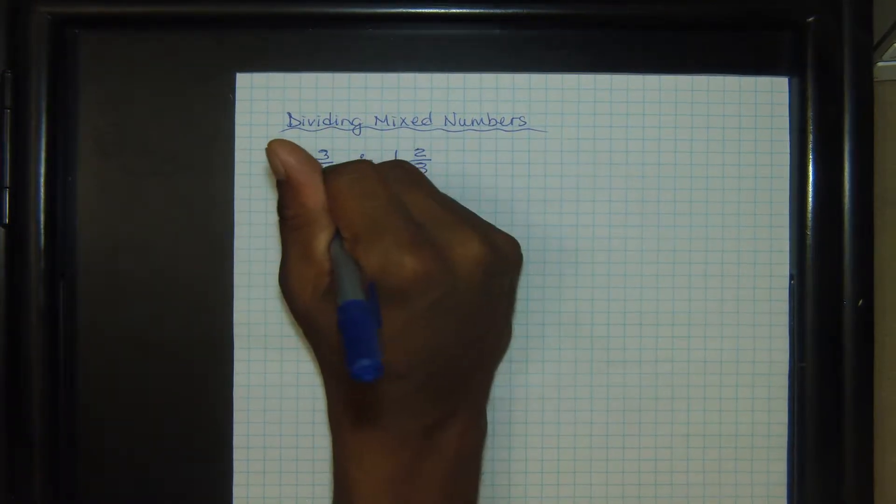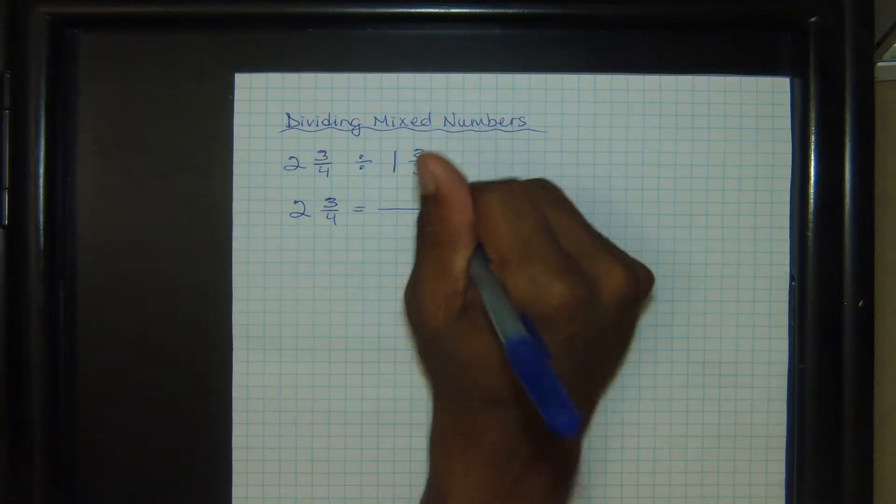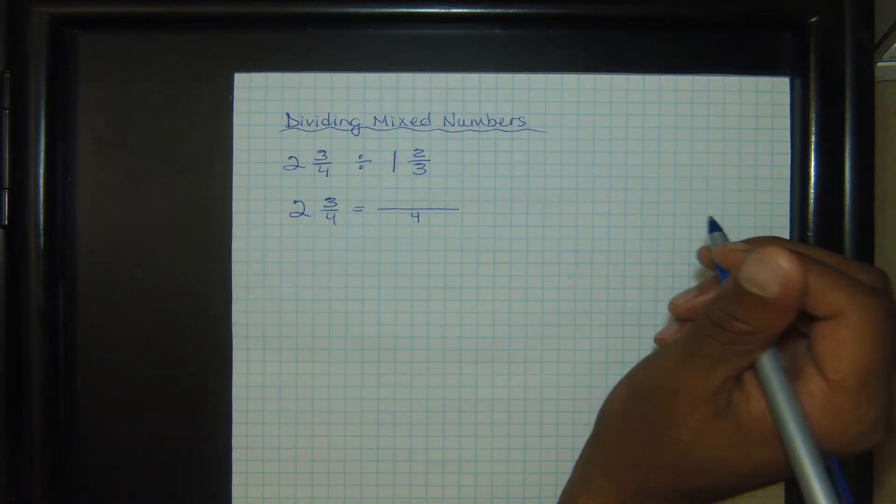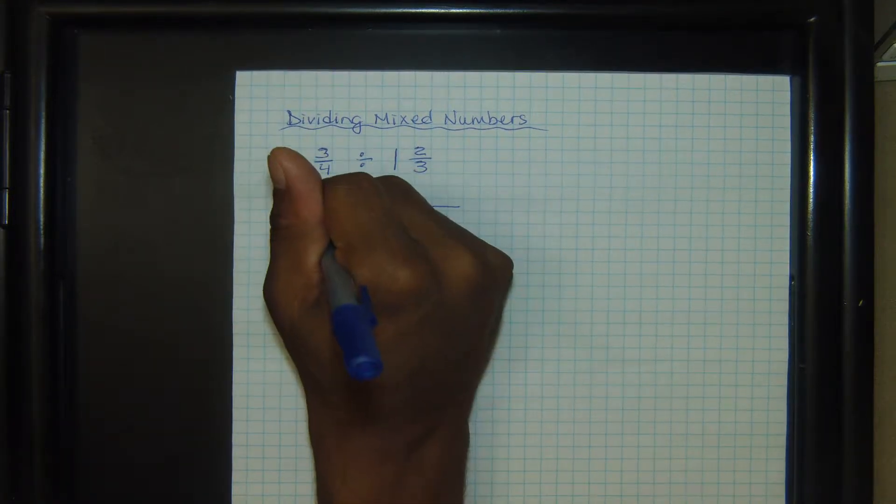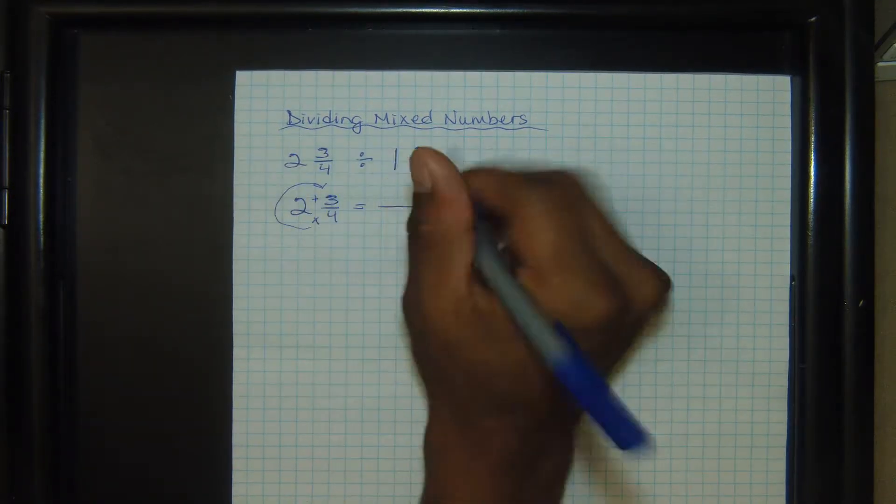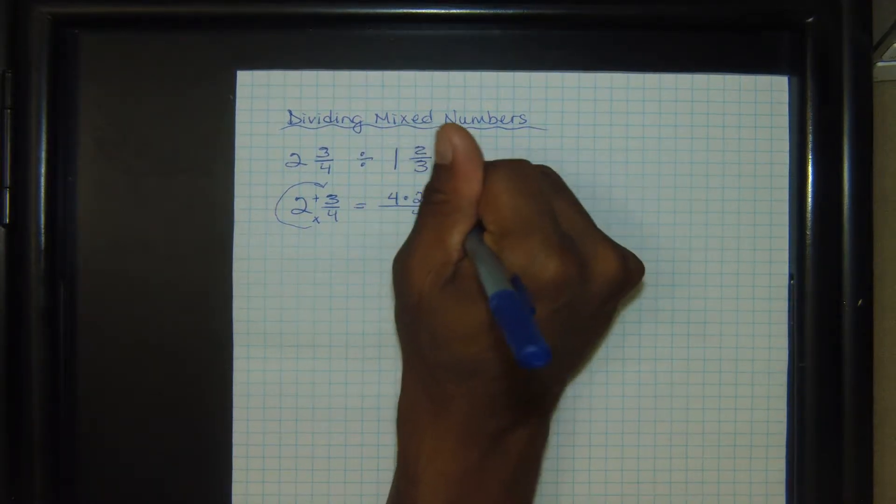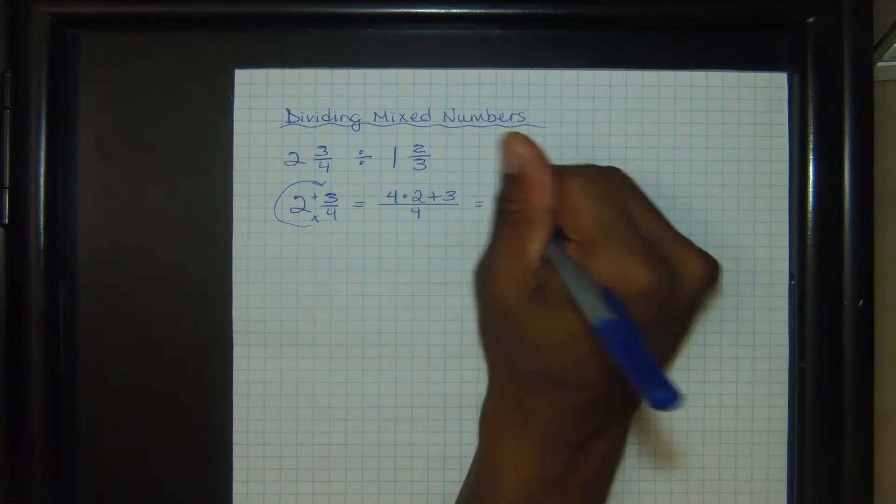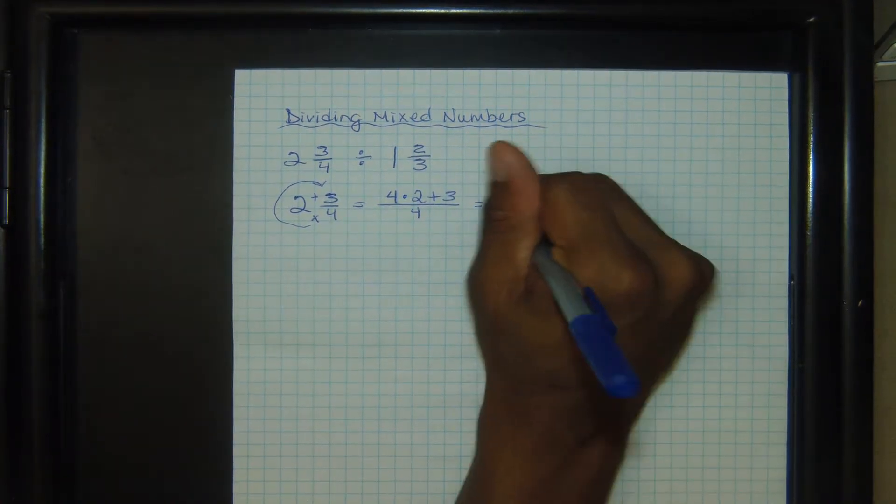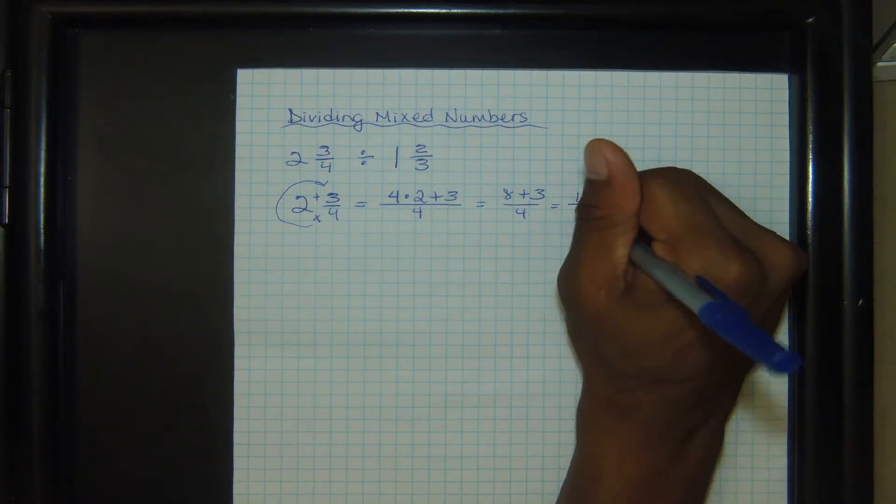So first I want to change two and three-fourths to an improper fraction. We keep the denominator the same. We multiply and then we add. So that's going to be four times two plus three. That's going to give us eight plus three, because four times two is eight. And then when we add that, that's going to give us eleven over four.